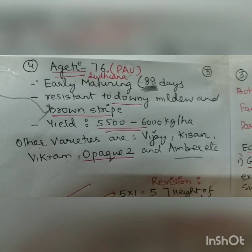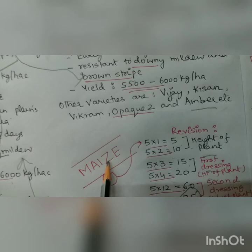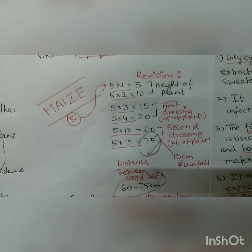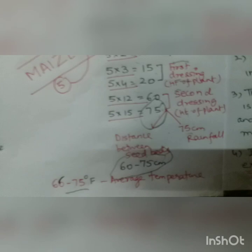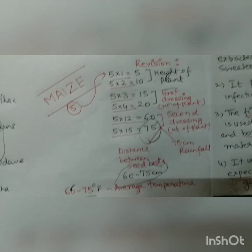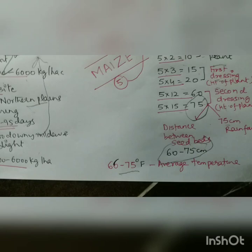Revision summary: Maize has five letters — five times five is the height in feet (5 to 10). Five times three is fifteen and five times four is twenty — first dressing height. Five times twelve is sixty and five times fifteen is seventy-five — second dressing height. Seventy-five is the annual rainfall requirement, 60 to 75 is seed bed distance, and 65 to 75 degrees Fahrenheit is the average temperature required for growth. Thank you — be safe, be indoors.